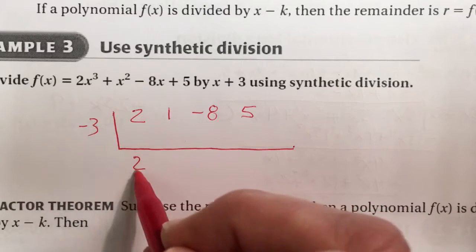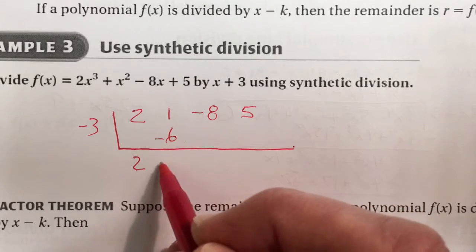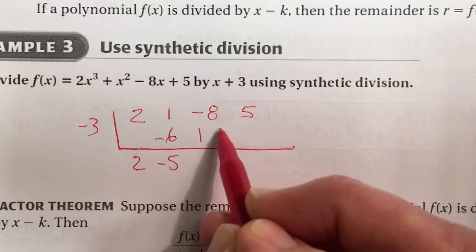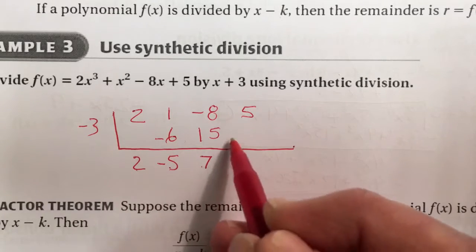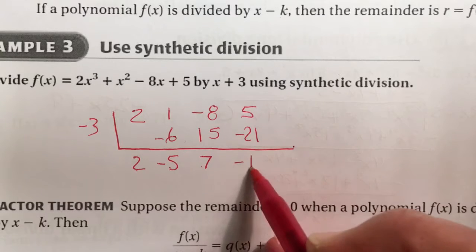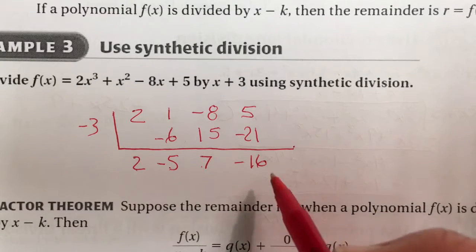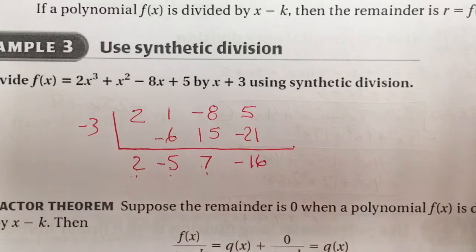Let's watch what happens. Bring down the 2. Multiply, you have negative 6. Add, you have negative 5. Multiply, it's positive 15. You have now 7. Negative 3 times 7 is negative 21. You now have negative 16. These are the coefficients now for the new quotient.